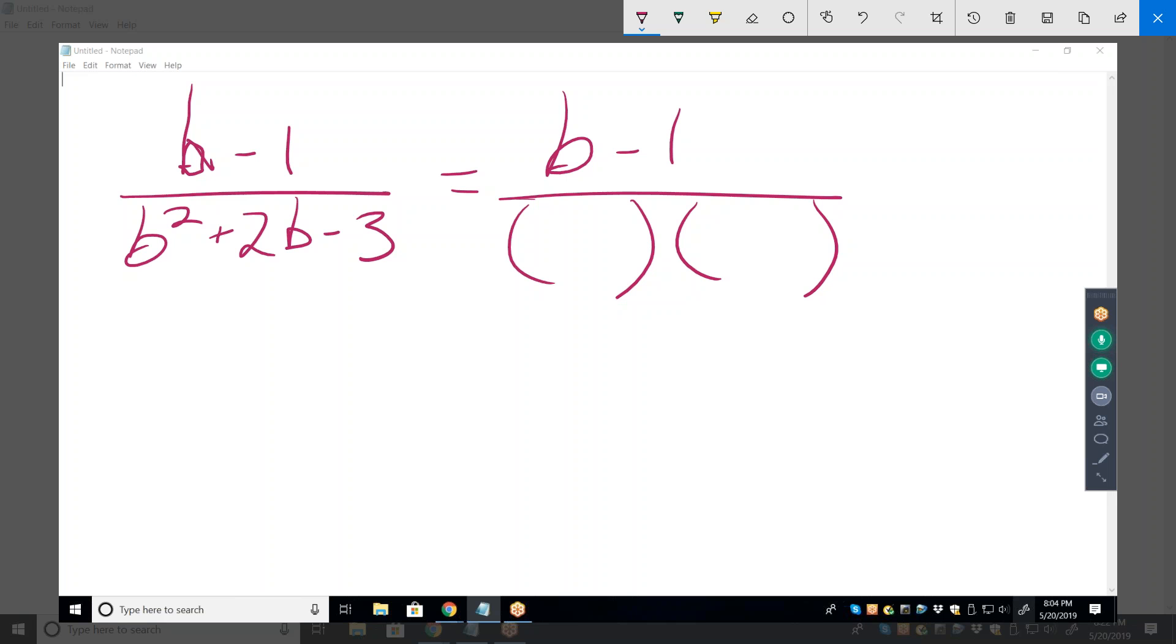So it would be B's on both sides, and then it would be positive 3, negative 1. Now what can I do? Cancel the B minus 1. So what's the answer? 1 over B plus 3.